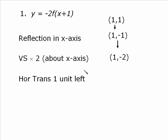And then we deal with the horizontal translation of 1 unit left. It does not affect the y-coordinate, only the x. So we go to the left 1. That is, we subtract 1 from the x-coordinate, and it takes us to 0 comma negative 2. So the point 1 comma 1 transforms to 0 comma negative 2 on this one.